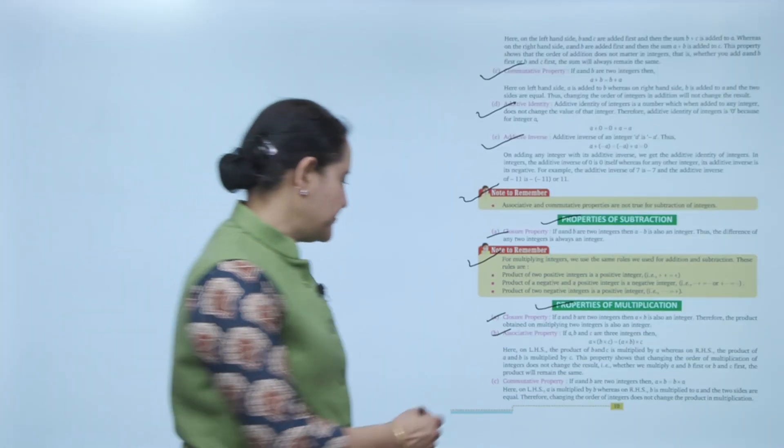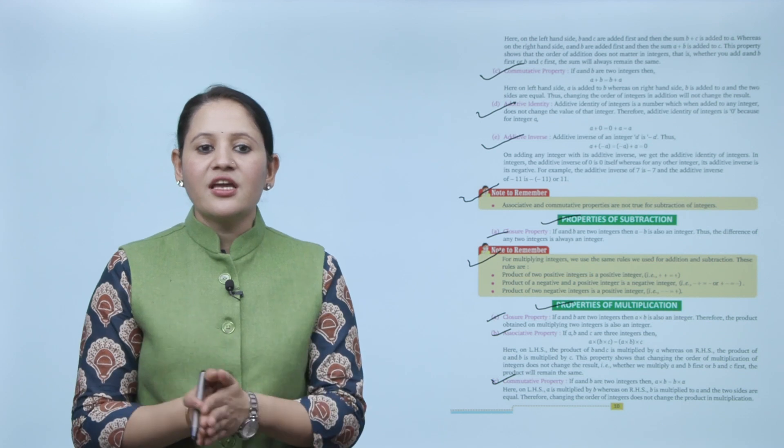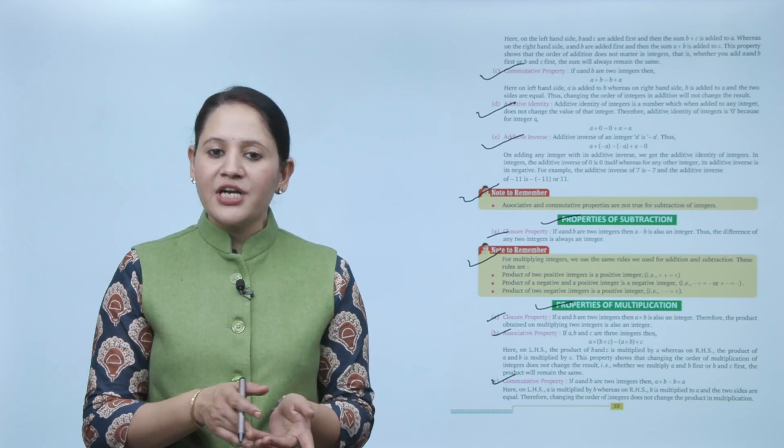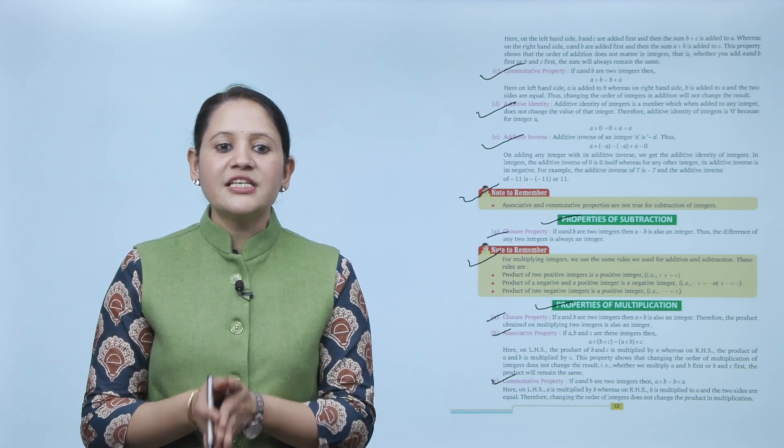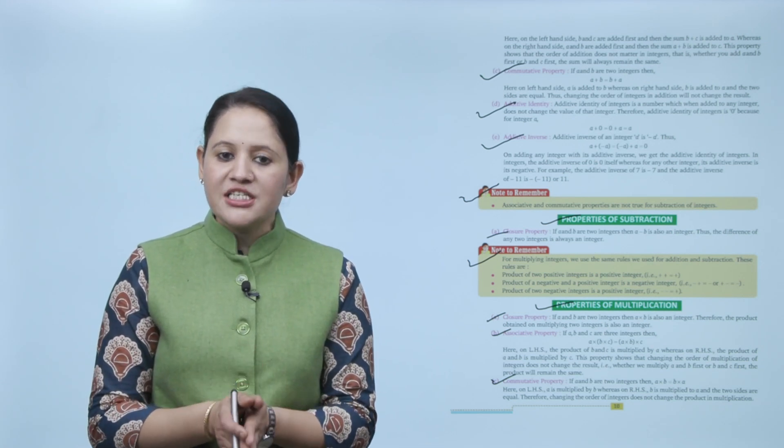Next is the commutative property: if a and b are two integers, then a times b equals b times a. On the left-hand side a is multiplied by b; on the right-hand side b is multiplied by a, and the two sides are equal. Therefore changing the order of integers does not change the product in multiplication — meaning we can multiply two or more integers in any order.